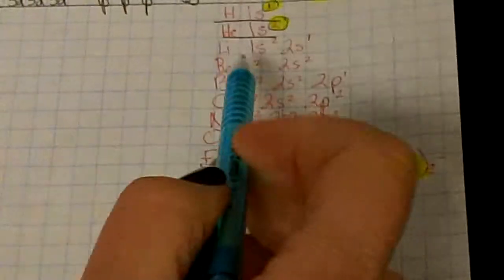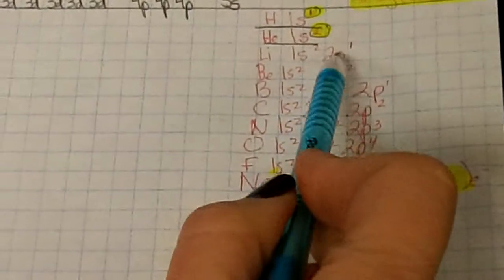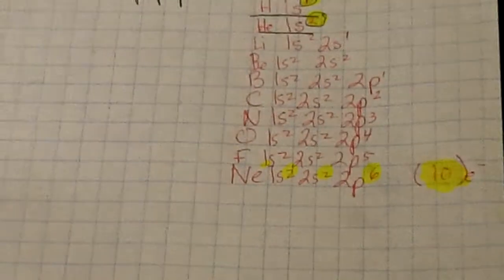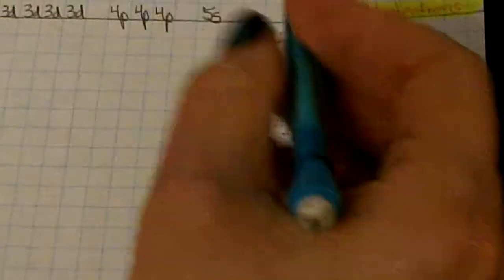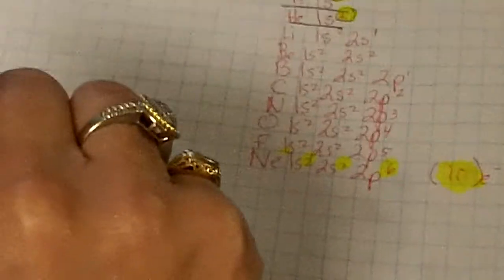Lithium is going to be 1s2, 2s1 because there are two electrons in the 1s and one electron in the 2s. And that's it. Thanks a lot. Bye.